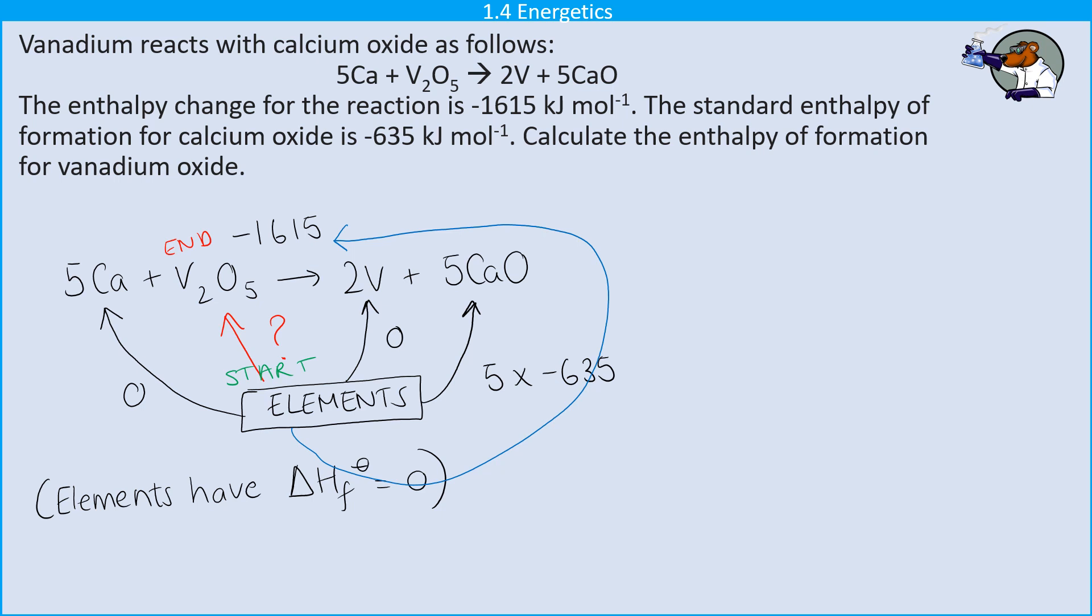So what I know is that the enthalpy change from start and going up the red arrow, in other words, zero plus, let's call it X, must be equal to the enthalpy change if I go up my arrow to vanadium and up my arrow to calcium oxide and then backwards along my whole chemical reaction arrow.